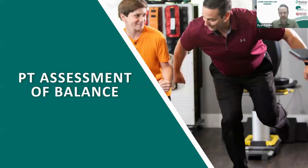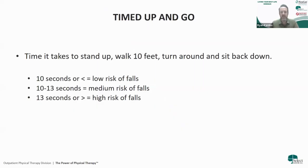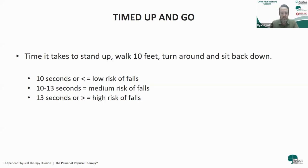One classic test PTs can do is the Timed Up and Go test, or TUG. We tell the patient to stand up from a chair as quickly and safely as possible, walk past a piece of tape about 10 feet away, turn around, and sit back down. Research shows that under 10 seconds is a low risk for falling, between 10 and 13 seconds is medium risk, and above 13 seconds is high risk. That's a quick way to assess fall risk.